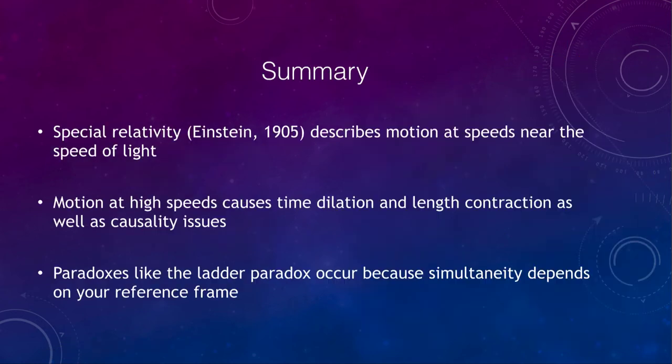So let's finish up here as we do with our summary. And what we find is, first of all, we talked about special relativity given to us by Einstein in 1905 and describes motions at speeds near the speed of light. In actuality, it describes motions at all speeds, but it is very important and needs to be used when we get to those very high speeds. This causes things like time dilation and length contraction, as well as causality issues. And we looked at an example. There are other paradoxes as well, but the ladder paradox is one good example. And the solution to it comes from the fact that simultaneity actually depends on your reference frame. So what frame of reference you're using will see different things as what is simultaneous to one observer is not necessarily simultaneous to another.